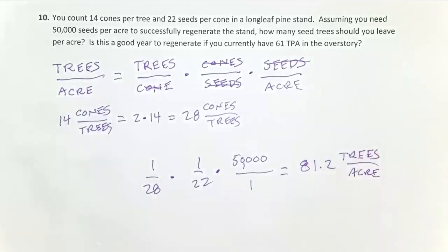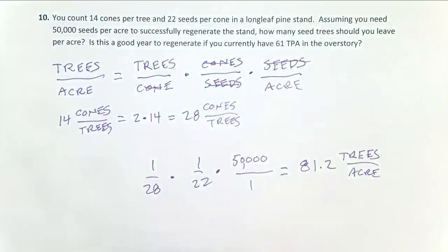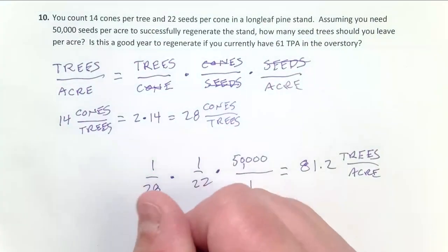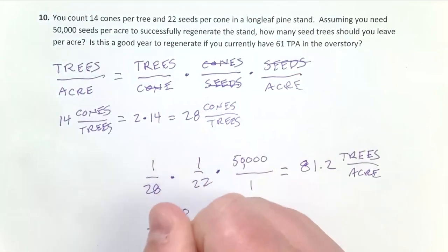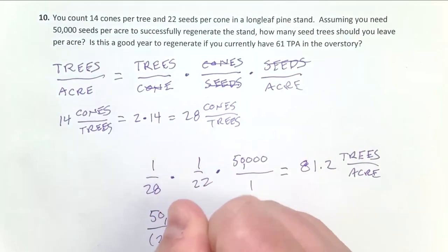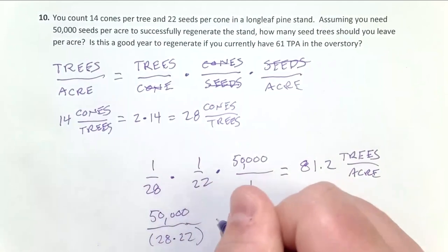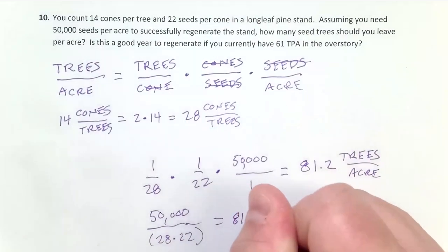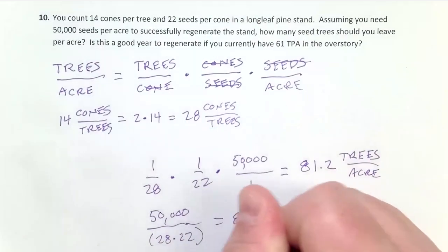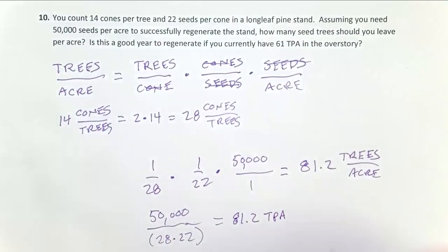Here's the quicker way I usually do these problems. Instead of all the unit analysis, I just do 50,000 divided by the product of the other two numbers — remembering to double the cone count — and that equals the same 81.2 trees per acre.